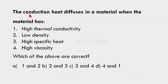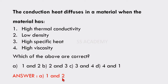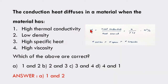Next question: Heat conduction diffuses in a material when it has (1) high thermal conductivity and (2) low density. Which of the above are correct — 1 and 2, 2 and 3, 3 and 4, or 4 and 1? The answer is 1 and 2: high thermal conductivity and low density. Tip: Thermal diffusivity is directly proportional to thermal conductivity and inversely proportional to density and specific heat.